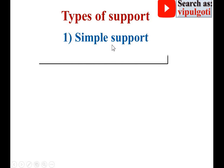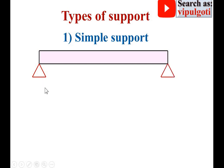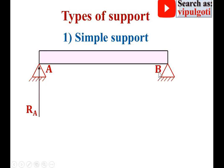Starting with the first one — simple support. This is the beam supported at the two ends. This is the symbol for the simple support. For example, this is end A of the beam, so the reaction is always in the vertical direction, that is RA. And if it is end B of the beam, this is the vertical reaction at B, that means RB.